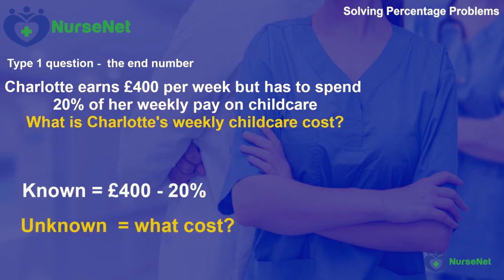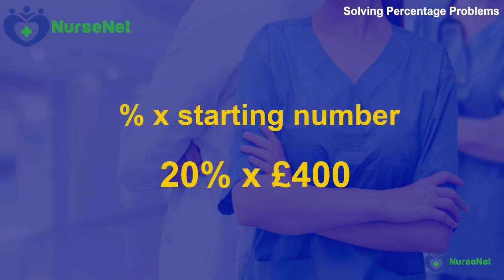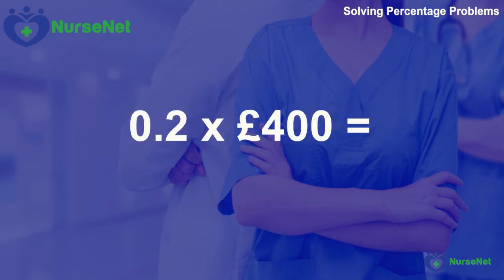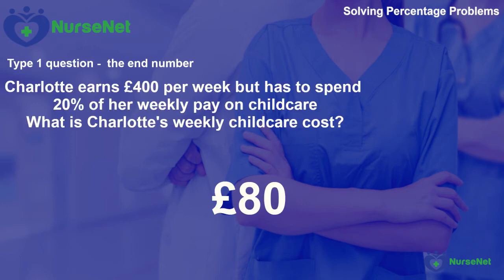To solve a Type 1 end number question, we apply the following formula: percentage multiplied by the starting number. Our percentage is 20 and our starting number is 400. We need to convert the percentage into a decimal first, so 20% becomes 0.2. If you're wondering why we do this, go back to the Converting Decimals, Fractions and Percentages lesson on the NurseNet website. We then multiply 0.2 by 400 to give us 80 — Charlotte's weekly childcare cost is £80.